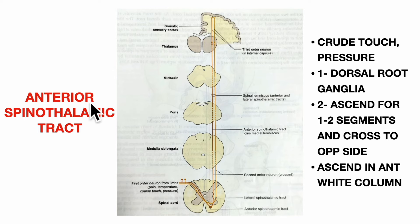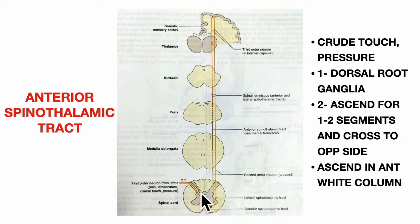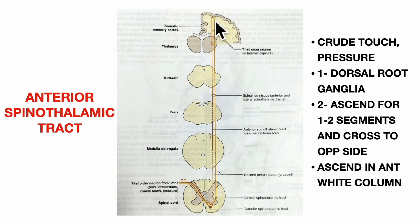The anterior spinothalamic tract carries fibers for crude touch and pressure. The first order neuron fibers are in the dorsal root ganglia. They relay in the grey matter of the posterior horn — nucleus proprius — in laminae 3 and 4. The second order neurons ascend one to two segments and cross to the opposite side in the white commissure, then ascend as a tract in the anterior white column of the spinal cord. The anterior spinothalamic tract then relays with third order neurons in the thalamus, which send information to the cerebral cortex.